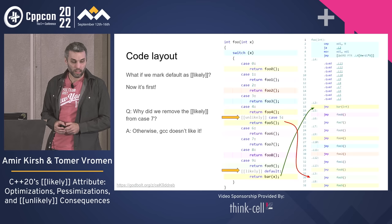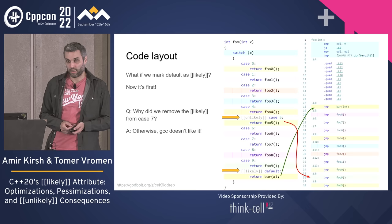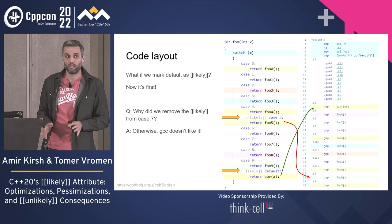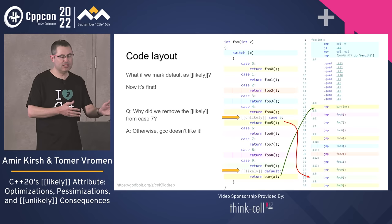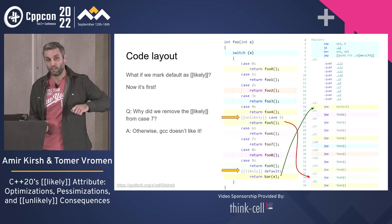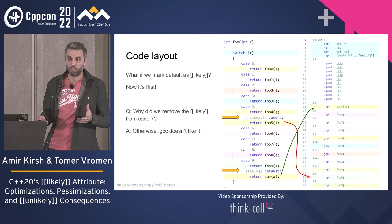We can put [[likely]] on the default case to move it first — by default our compiler thinks the default case is unlikely, but we can say otherwise if we know what we're doing. We see these things with a specific compiler; different compilers may act differently. Interestingly, with Clang/LLVM, putting likely on the default actually brings it even further up into the switch logic itself — Clang is even more aggressive than GCC in this respect.